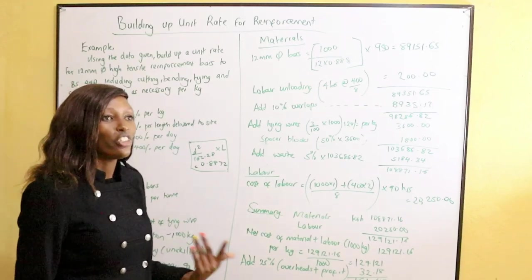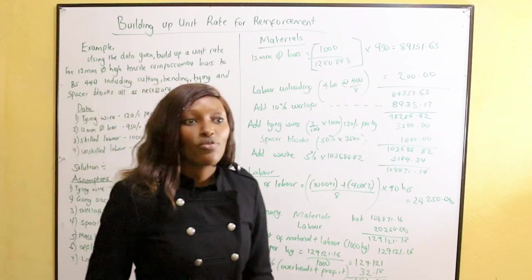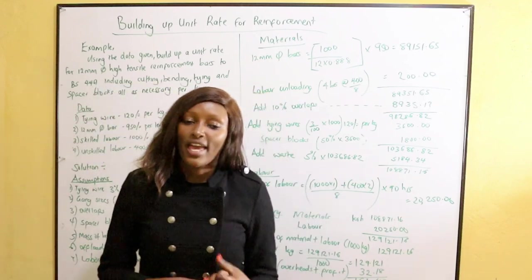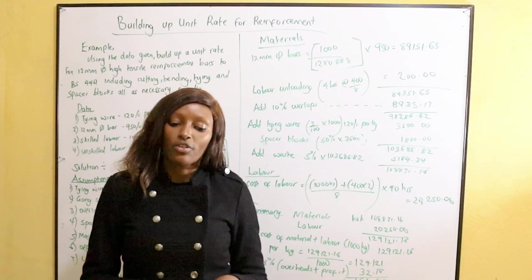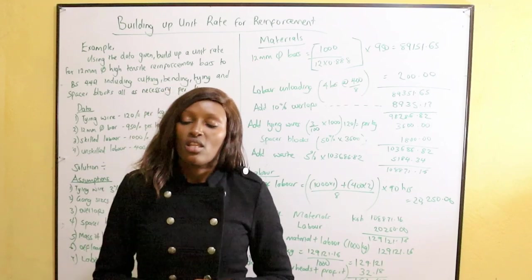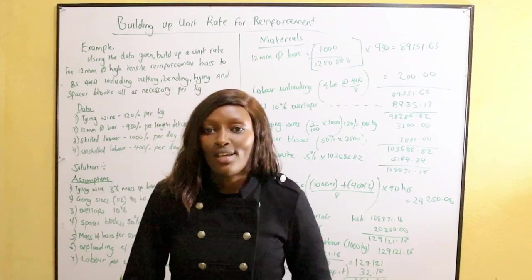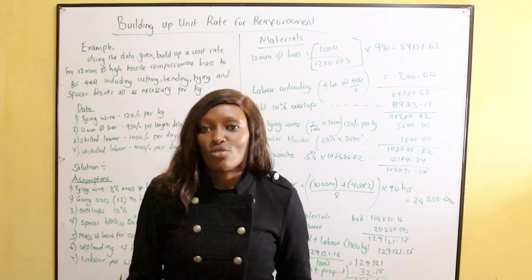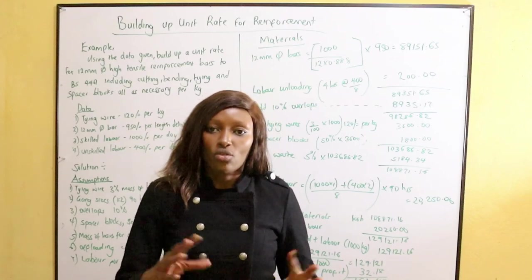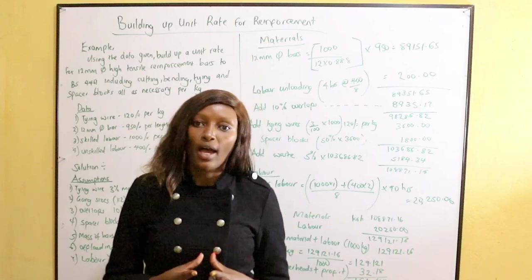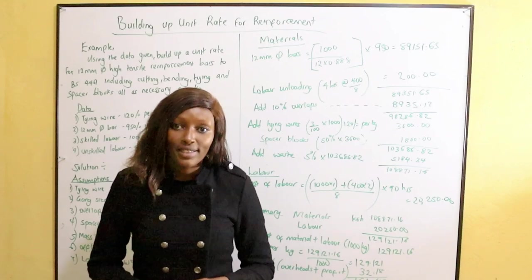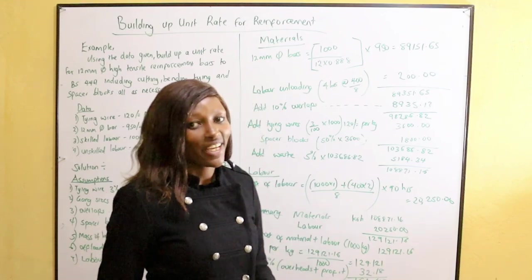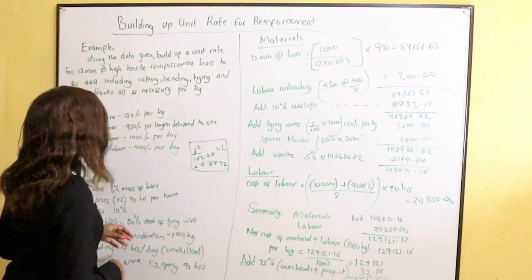We need to find the unit rate for one kilogram of 12mm bar. Once we find the rate per kg, whatever number of kilograms we use for the whole structure, we multiply by the rate per kg to get the total cost. The unit rate for reinforcement is usually expressed per kilogram.